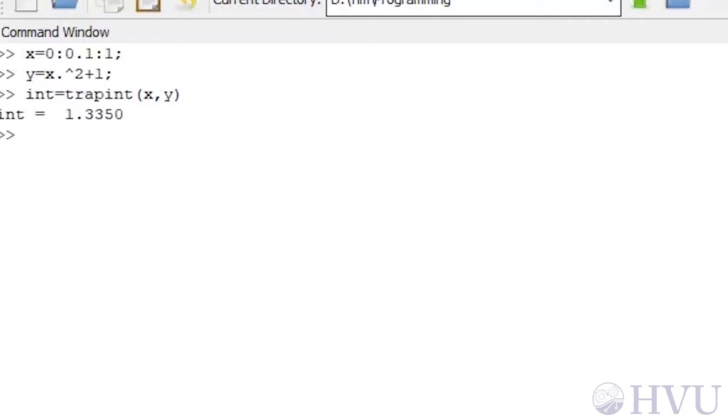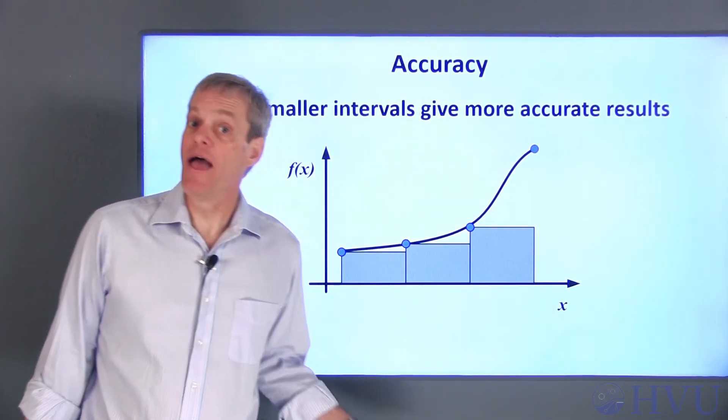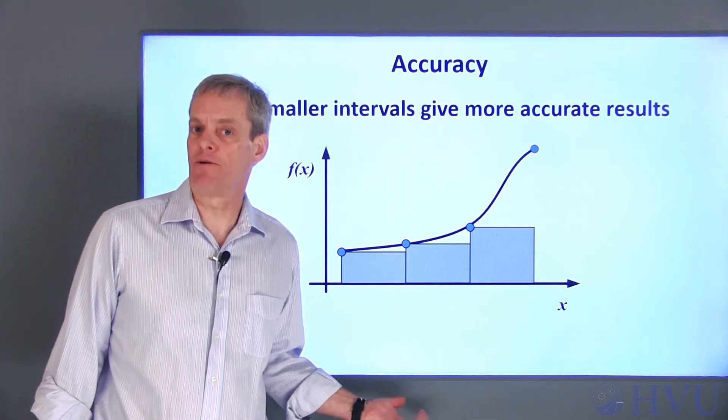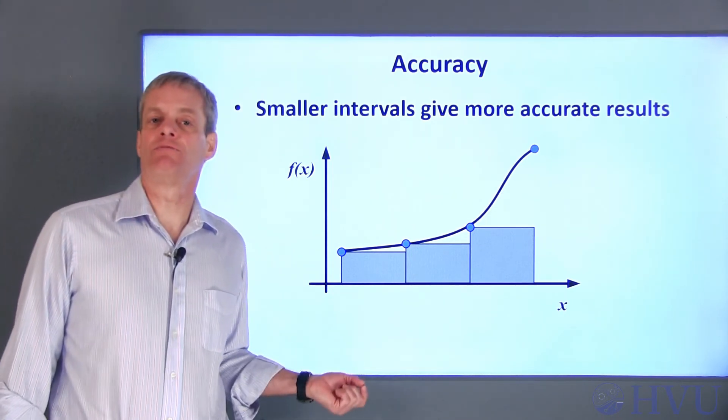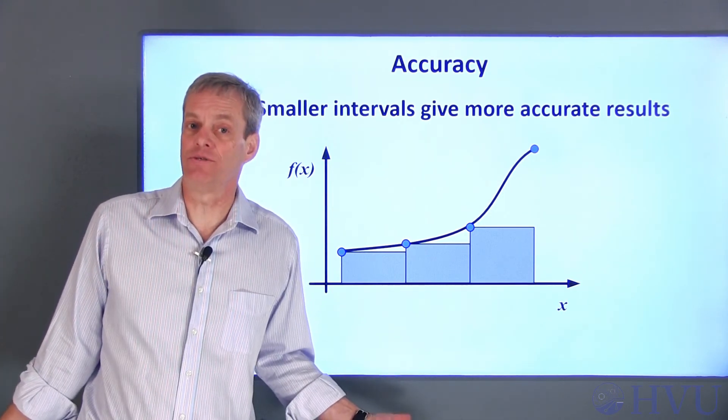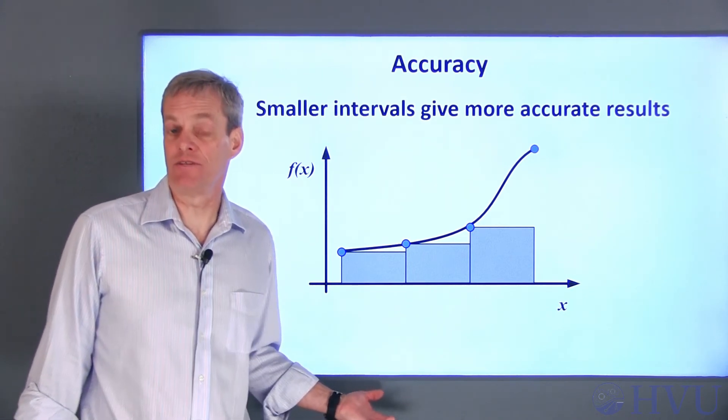Next, let's take a look at how we can improve this estimate and, maybe more importantly, how we can get a feeling for how accurate our estimate is without determining the exact solution. As long as our assumptions about the behavior of the function are reasonable, and we can make our subintervals small enough, we should be able to get a reasonable approximation to the exact integral. However, how can we tell if the result of our integration is close enough to the exact solution, since we don't know the exact solution? To answer that, let's take a look at what happens as we reduce the size of the subintervals.